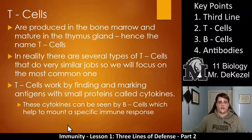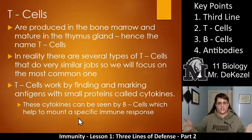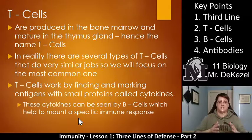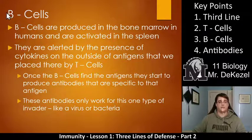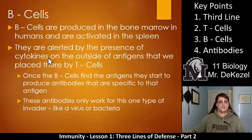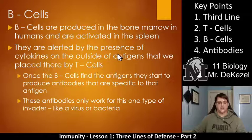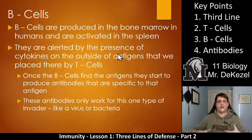B-cells help mount a specific immune response. The second line was a generic, all-out assault, but if that doesn't work, you need to get specific and take specific action. T-cells start to mark these foreign invaders with cytokines. B-cells are also produced in the bone marrow and are activated in the spleen. When they are alerted to the presence of cytokines on the outside of antigens — placed there by T-cells — they start to get activated.